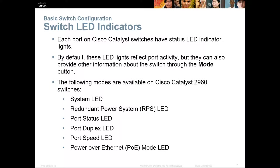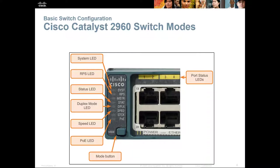Switch LEDs consist of a system LED, a redundant power system LED, port status, port duplex, port speed, and PoE. You can cycle through these with the mode button to see the functionality of each specific mode. For example, if you want to see which ports are using PoE, navigate the mode button down to PoE, and only the ports with active PoE will light up.